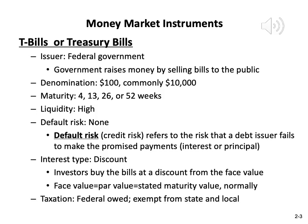The liquidity of the treasury bills is very high. T-bills are the most actively traded money market instrument. Default risk is none. Default risk means the issuer cannot pay the promised payment. So far, the US government has never defaulted on the T-bills, so it's considered as default risk-free.